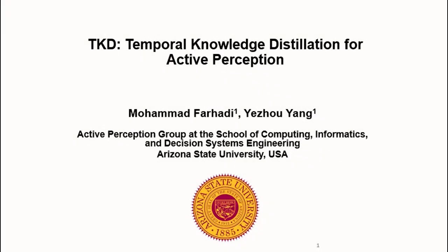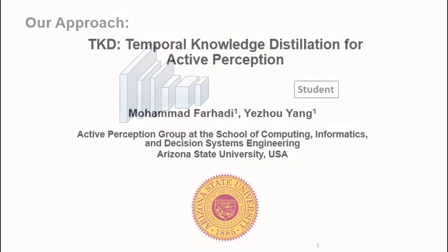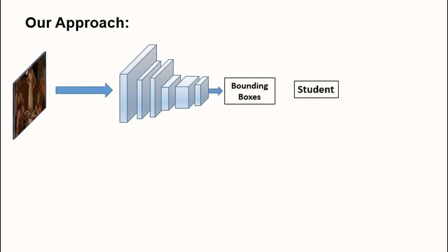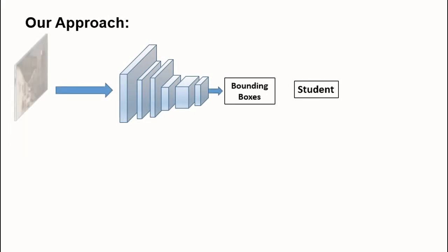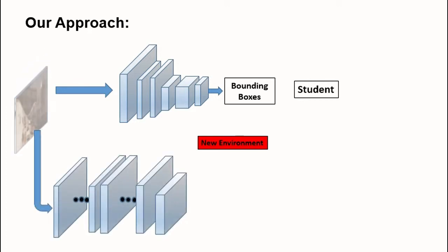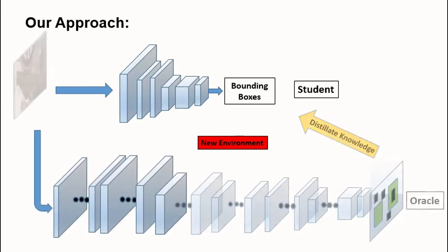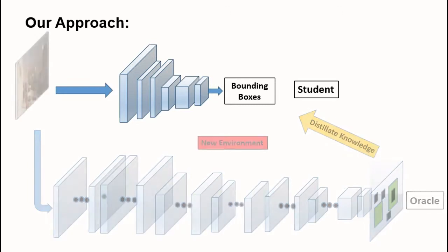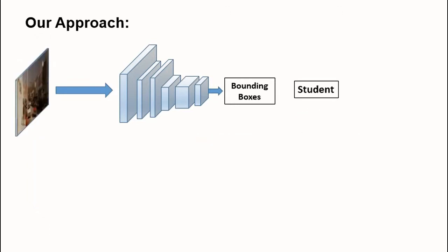This video describes Temporal Knowledge Distillation for Active Perception. We designed a temporal adaptation neural network for detecting objects fast and accurately in different environments. We use knowledge distillation at inference time to adapt the student model to the new environment using Oracle Knowledge.